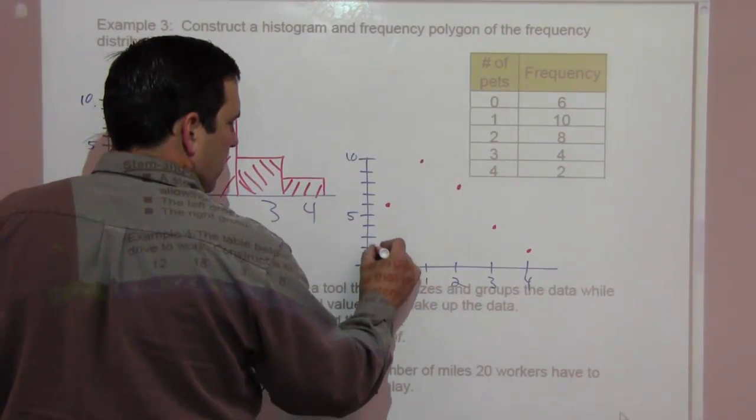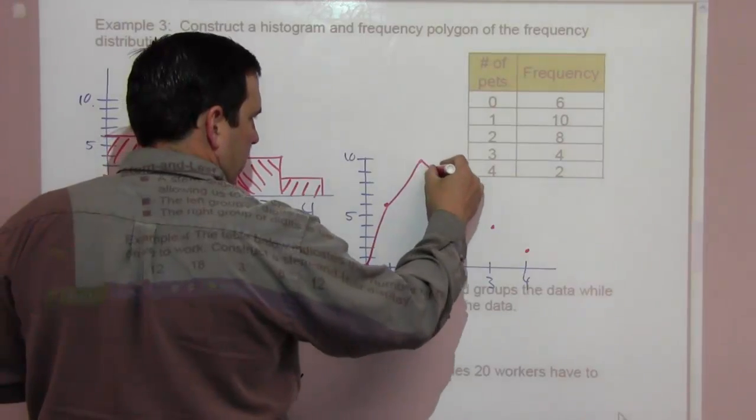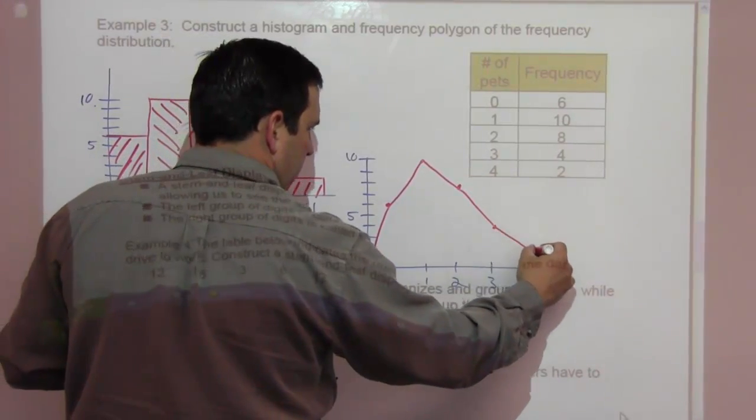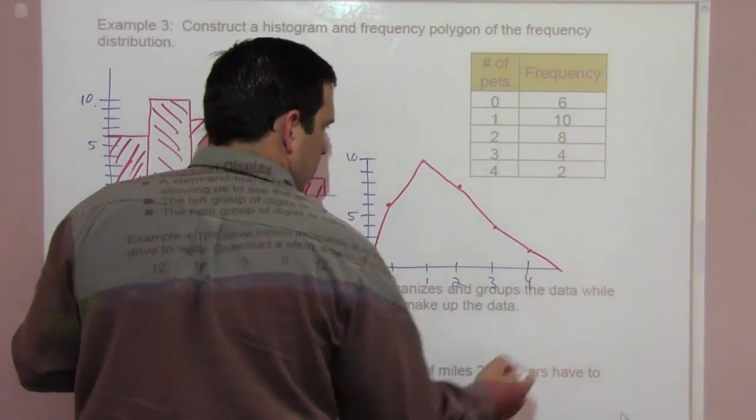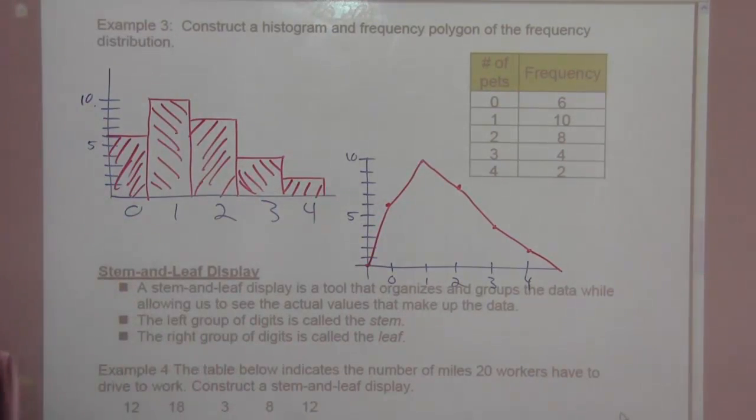So it starts here, goes up to that. There, there, there, there, there. And then back down again. So there's a frequency polygon. Feel free to pause that. I'm going to go on.